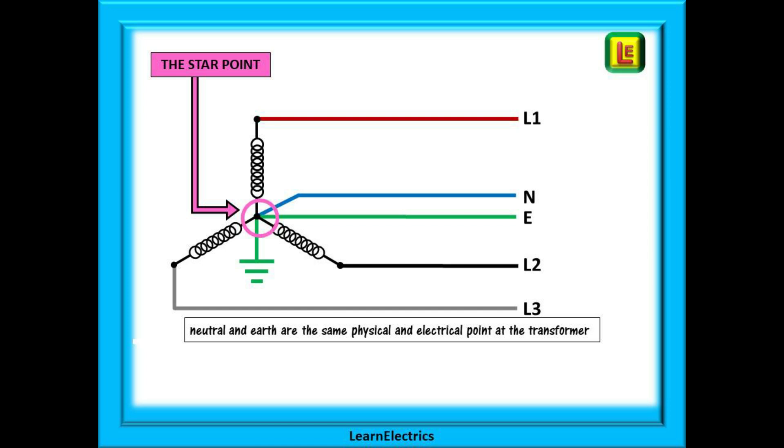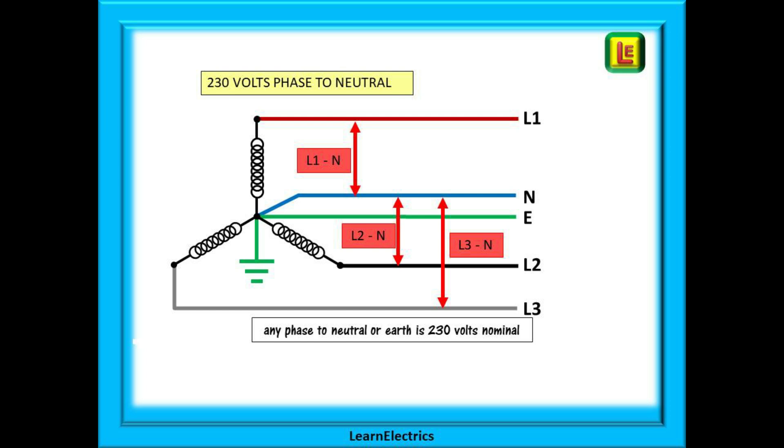How the earth and neutral arrive at the property after they leave this point will determine if the system is TNS, TNCS or TT. If we measure from any phase to the neutral we will get 230 volts nominal. L1 to neutral, L2 to neutral, L3 to neutral, each will be 230 volts. A measurement between a phase and earth will be 230 volts also. Neutral to neutral should always be 0 volts.